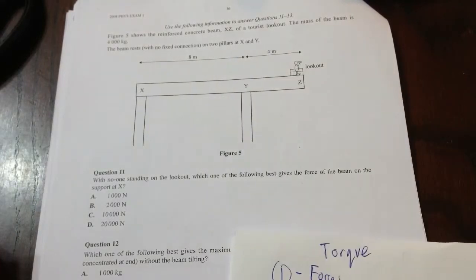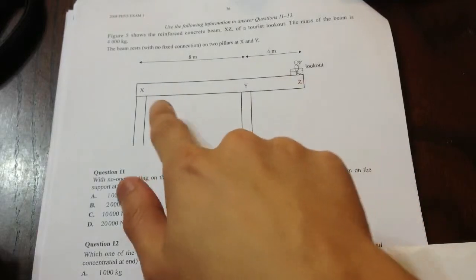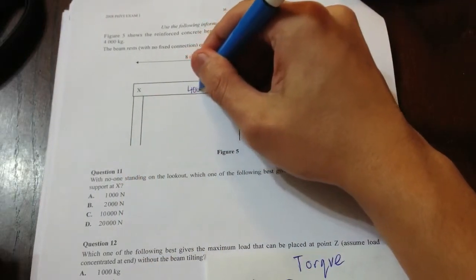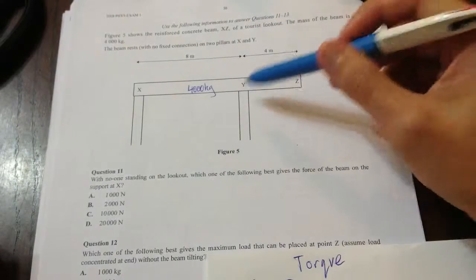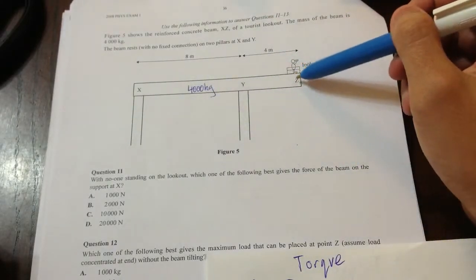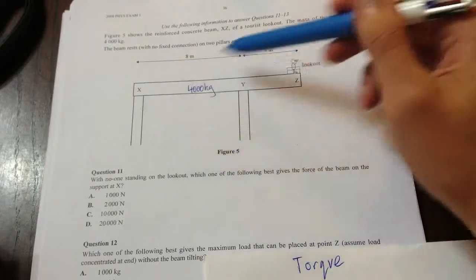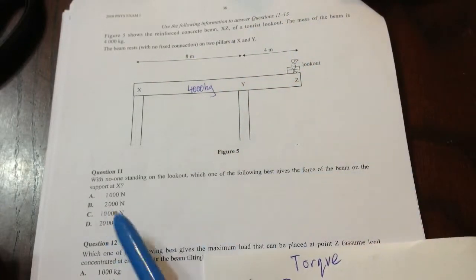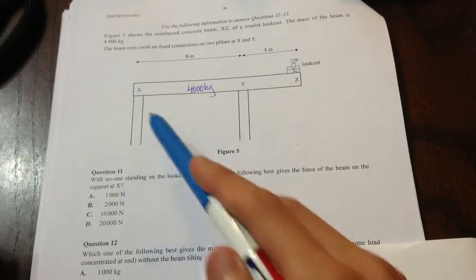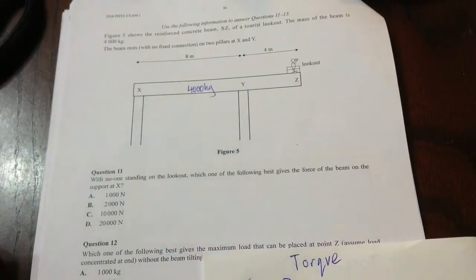Okay, so here's our question. We have a 4,000 kg plank or whatever, suspended by two pillars. And these are the distances. And they're asking us to find what's the force pushing up here.